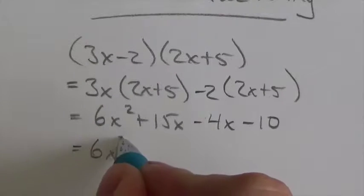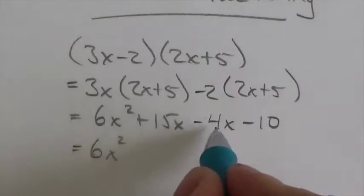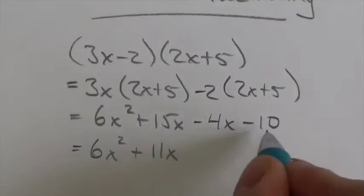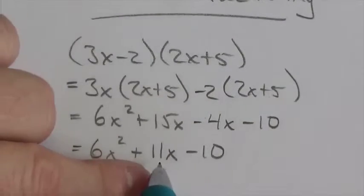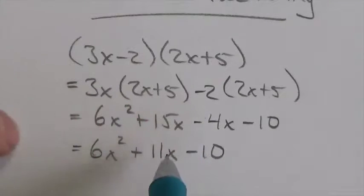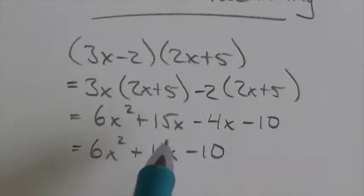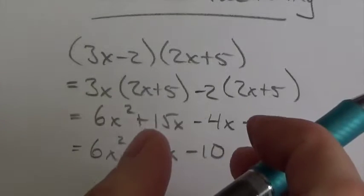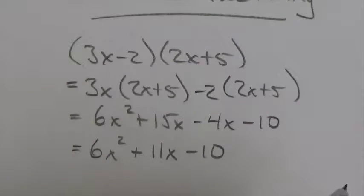So 6x squared, well, positive 15 and negative 4 is going to get me 11x with a negative 10 at the back there. And the fact that those two get combined together, that's what causes some of the difficulty here because it's kind of difficult to undo that little bit of addition there, the adding of the negatives there.